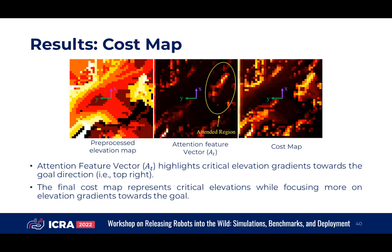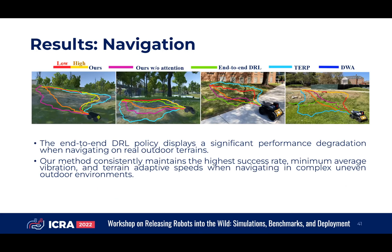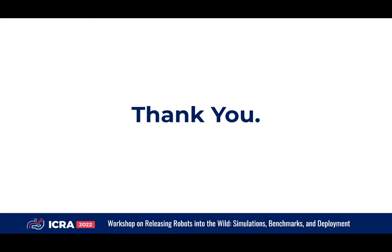The cost map generated using features extracted from the DRL network highlights critical elevation changes towards the goal direction — the navigation cost map attends more to critical regions towards the goal. We compare against the end-to-end DRL policy and other state-of-the-art methods using a Clearpath robot in simulation and the real world. We observe comparable performance from both end-to-end and our method in simulation. However, there is significant performance degradation in the end-to-end method in the real world, while our strategy performs comparably better in both environments. Thank you.